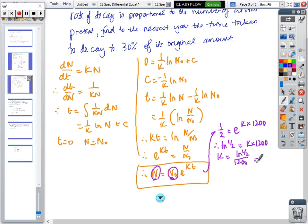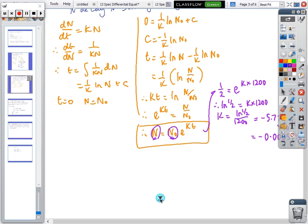So ln(1/2) equals k times 1200, so k equals ln(1/2) divided by 1200. On your calculator that equals -5.7776 × 10^(-4), which is the same as -0.00057776.